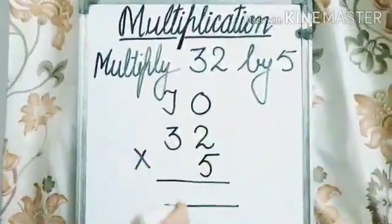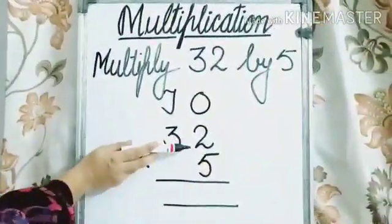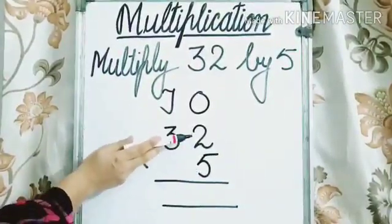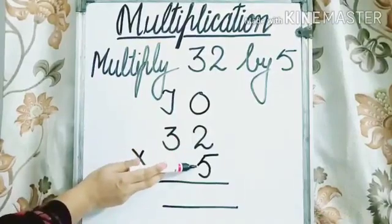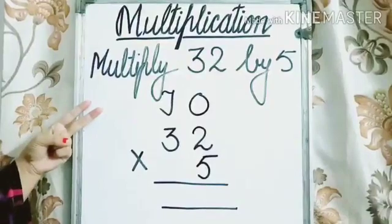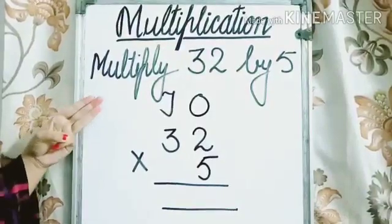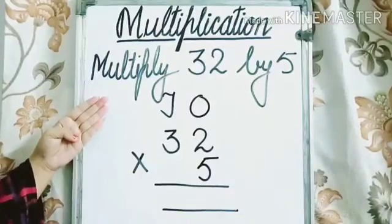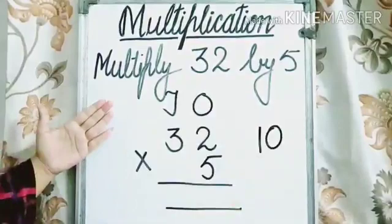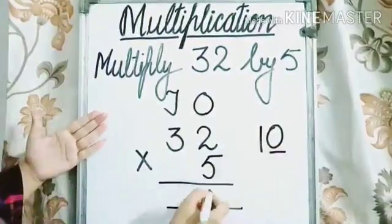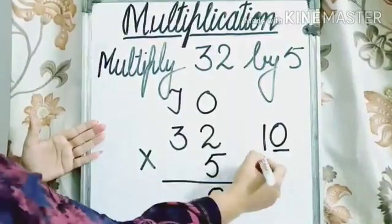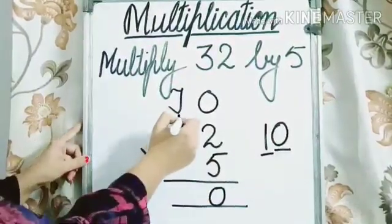Step 1. Multiply the digit at the 1's place by 5. Means we need to multiply 2 by 5. 2 ones are 2, 2 twos are 4, 2 threes are 6, 2 fours are 8, and 2 fives are 10. So we need to write 0 under the 1's column and carry over this 1 to the 10's place.